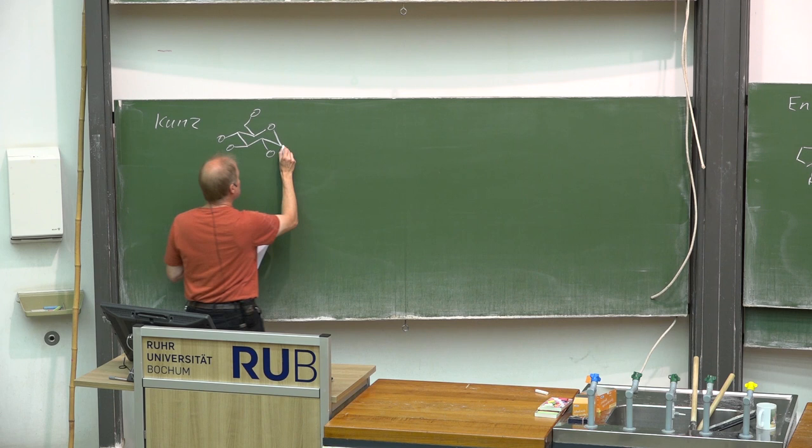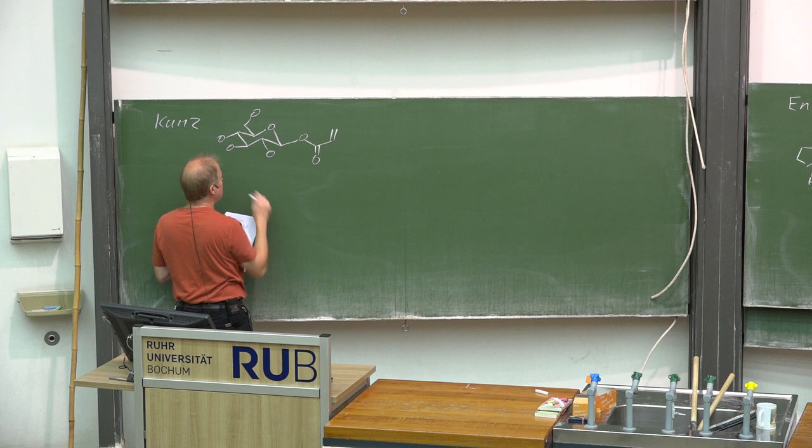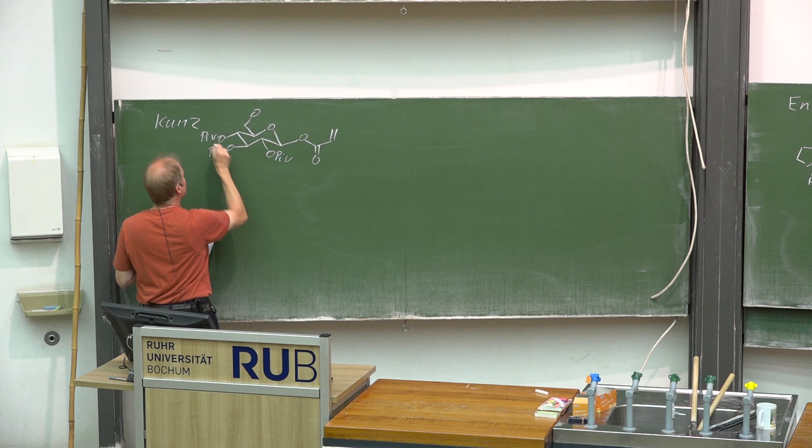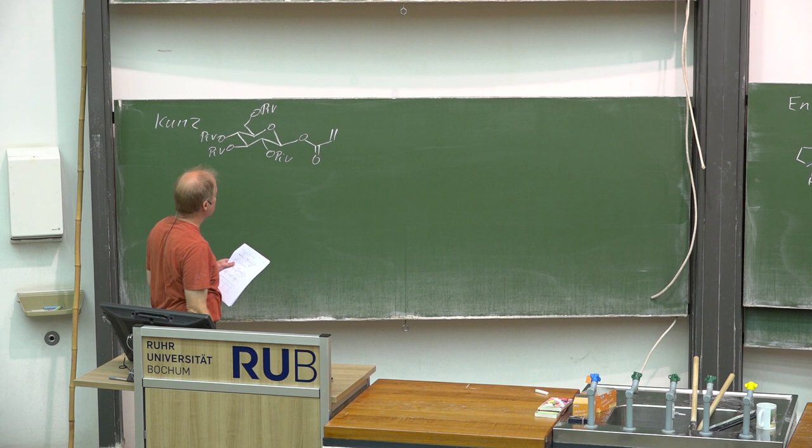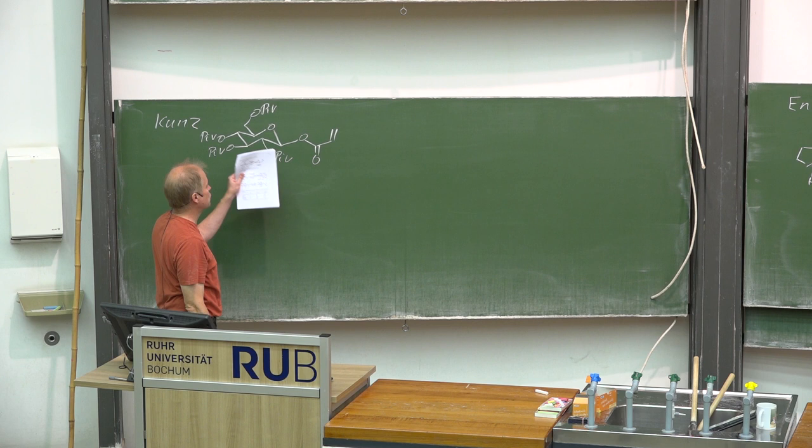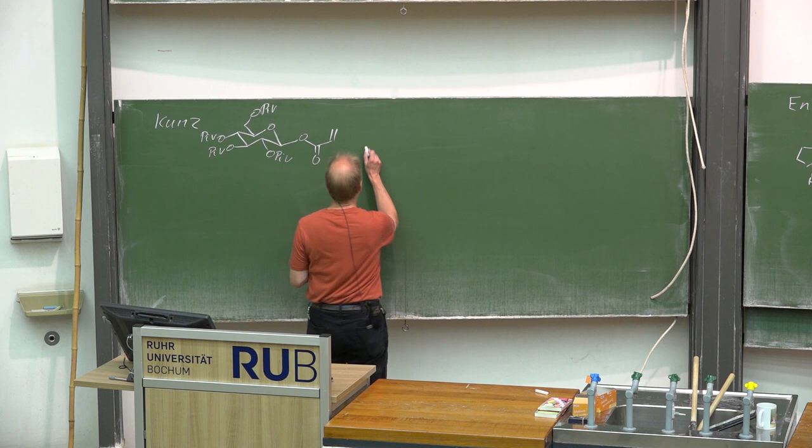An example: a galactosyl derivative was used, all remaining alcohols protected with pivaloyl groups, and here we have that alpha-beta unsaturated ester—it is an acrylic acid ester of that chiral auxiliary.